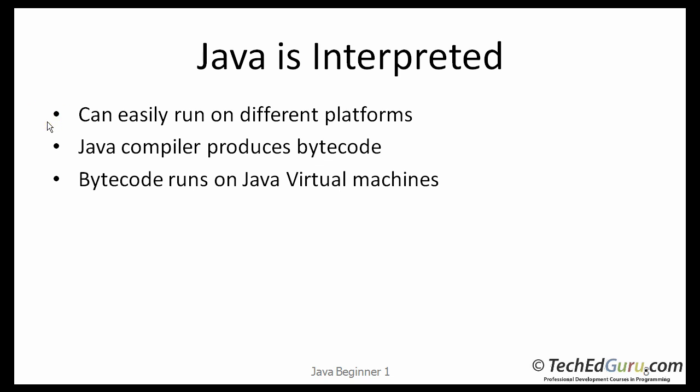Java is an interpreted programming language, and because of that it can easily run on different platforms. You could build a Java application, compile it on Windows, and take the compiled file and run it on Linux or Macintosh. The Java compiler produces bytecode, and that bytecode runs on the Java Virtual Machine, or Java Runtime, which is available for a variety of operating systems.